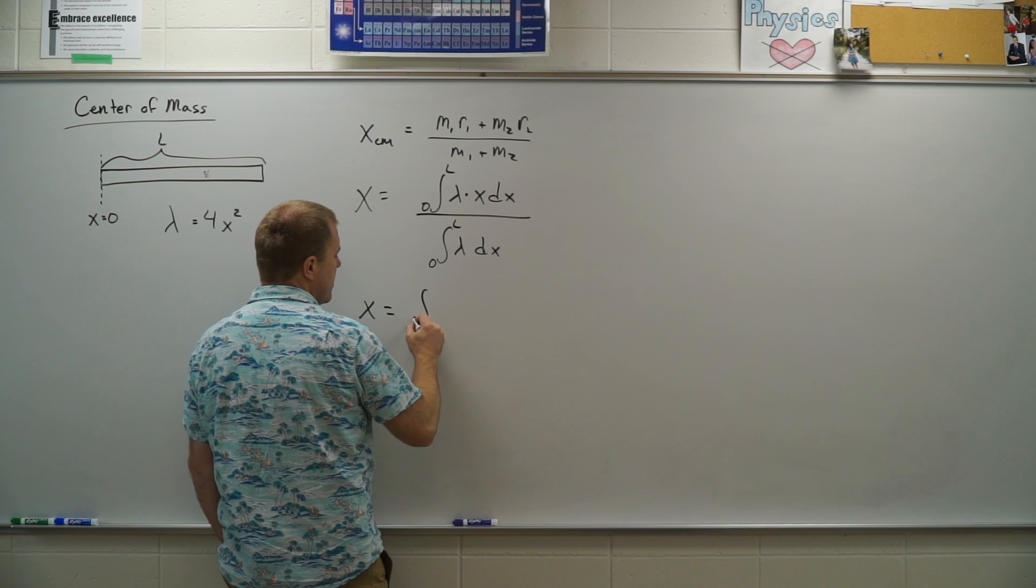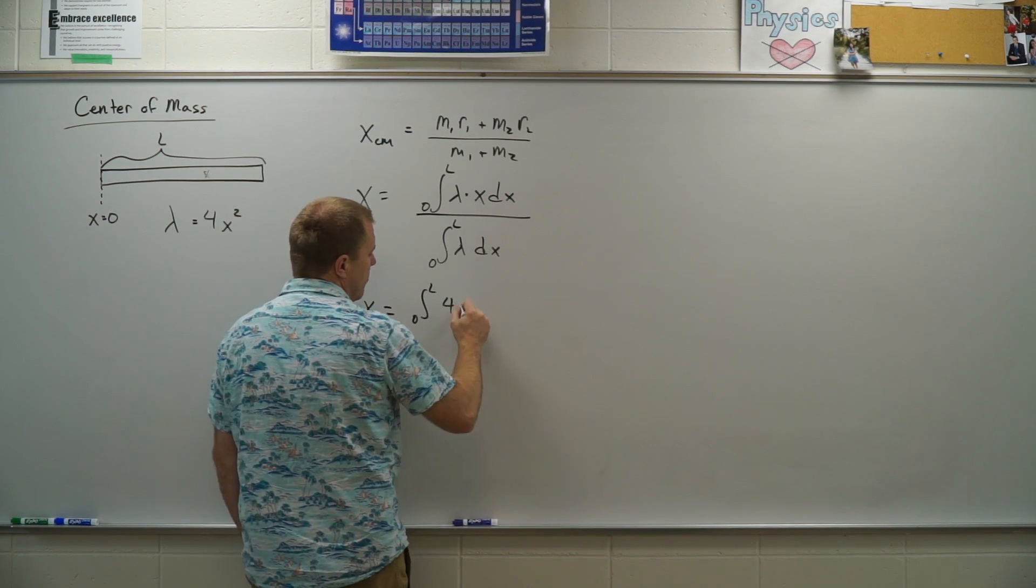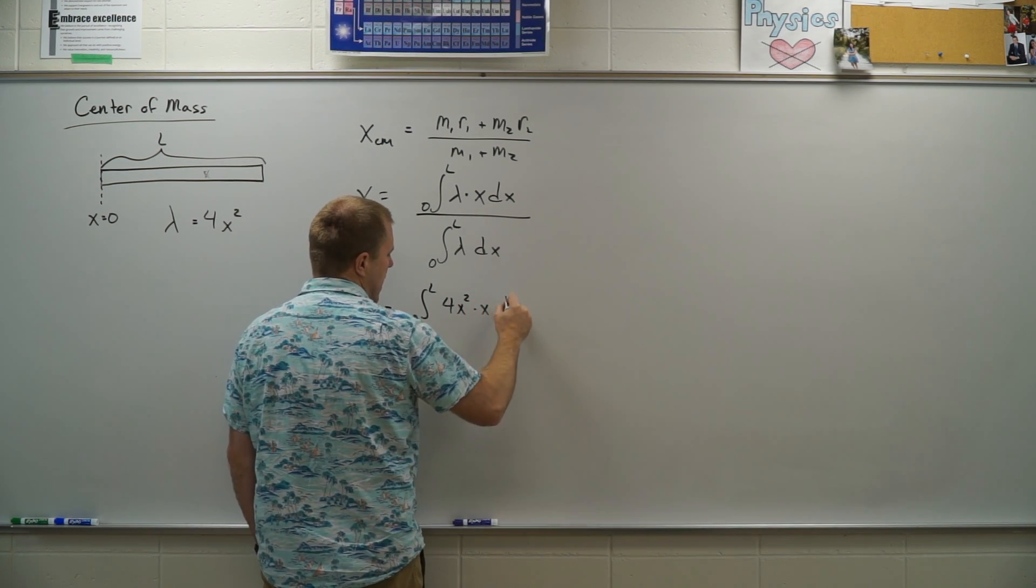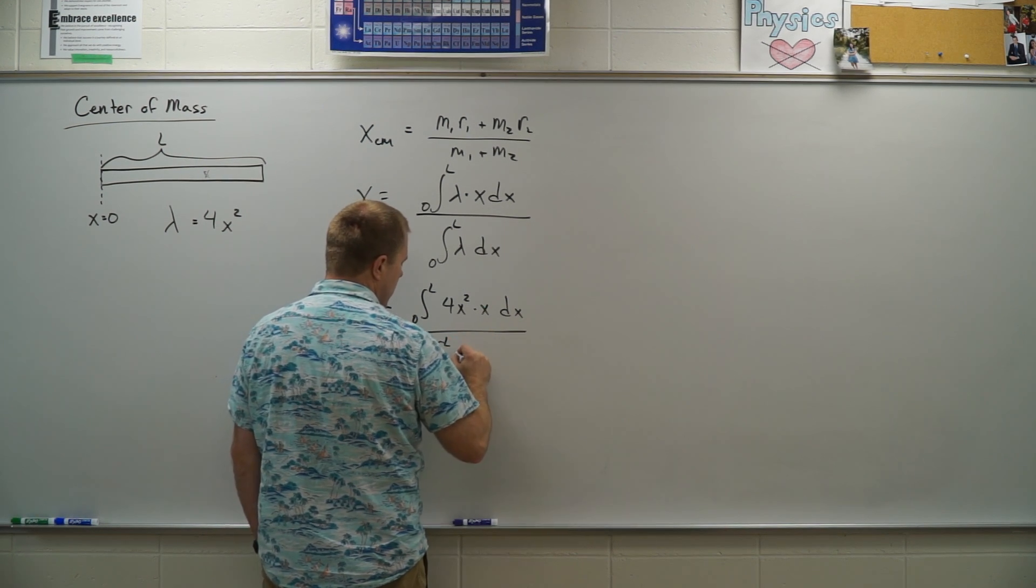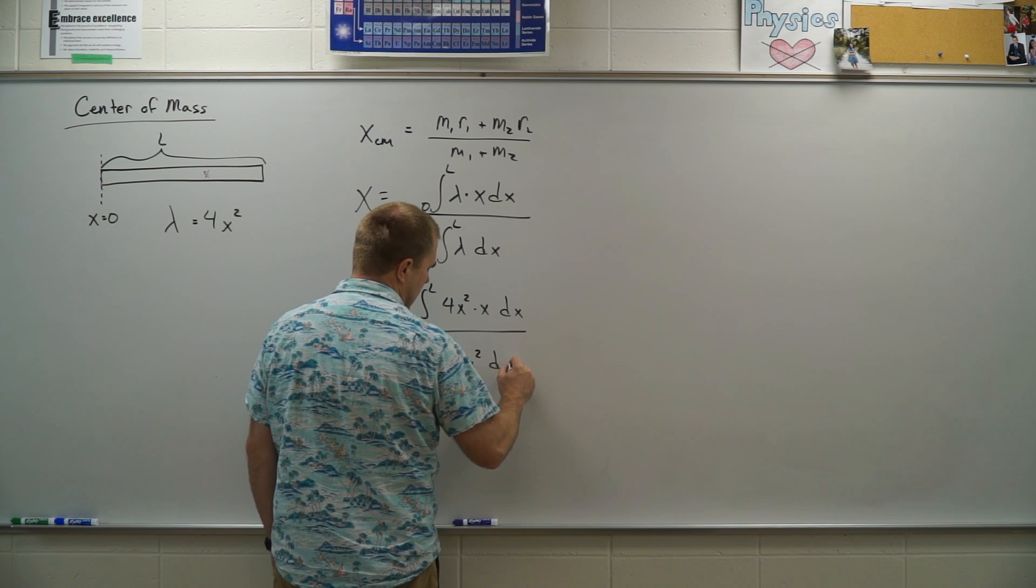So I have x is equal to the integral from 0 to L of 4x squared times x dx, all divided by the integral from 0 to L of 4x squared dx.